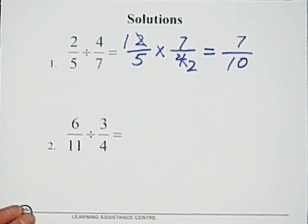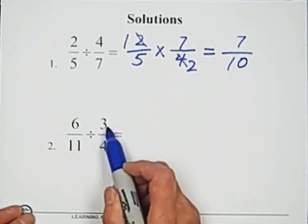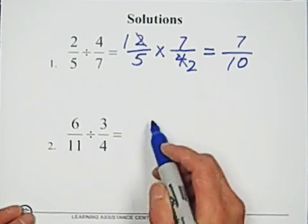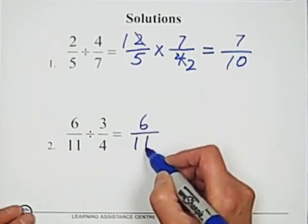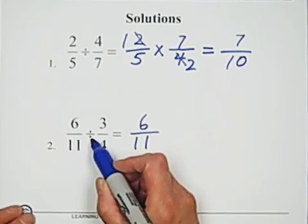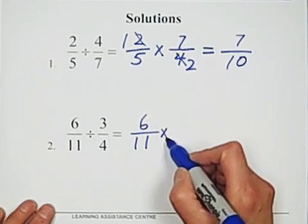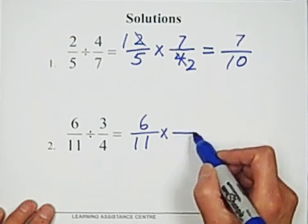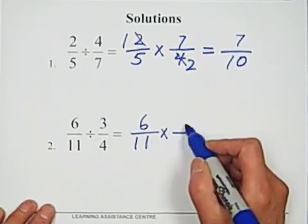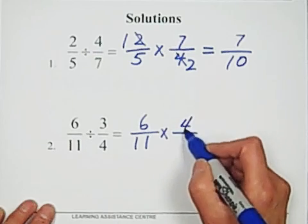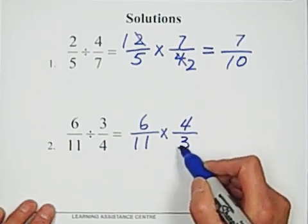Second solution: six over eleven divided by three over four. Write six over eleven, convert division to multiplication, and invert the second fraction — four goes to the top, three comes to the bottom.